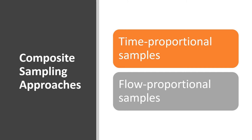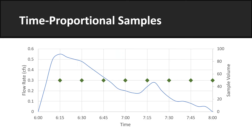There are two basic approaches for obtaining composite samples, referred to as time-proportional and flow-proportional. A time-proportional composite sample is prepared by collecting individual sample aliquots of equal volume at equal increments of time during a storm event — for example, every 15 minutes — and then mixing those aliquots to form a single sample for laboratory analysis. Time-proportional samples do not account for variations in flow, so they generally do not provide reliable estimates of event mean concentrations or pollutant loads, unless the interval between aliquots is very brief and flow rates are relatively constant.